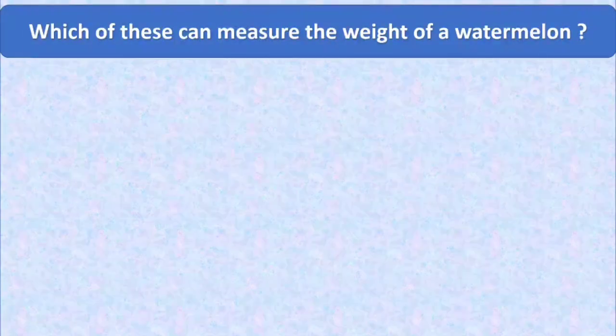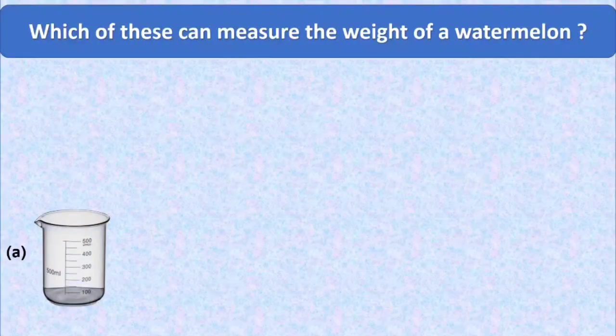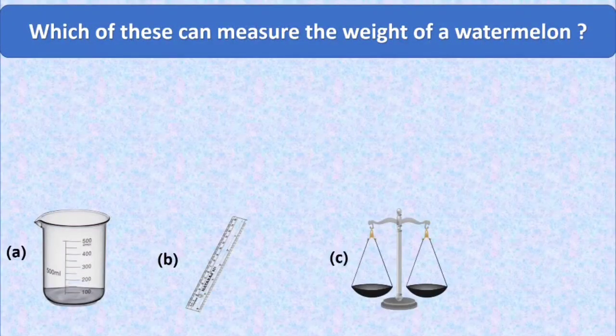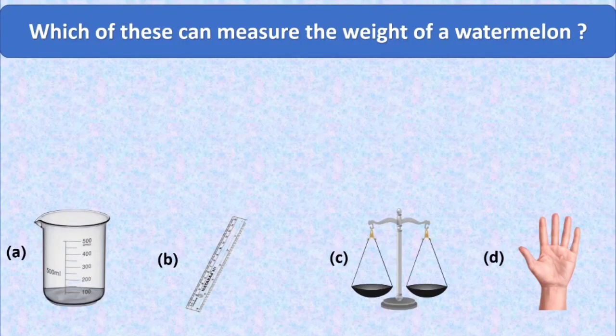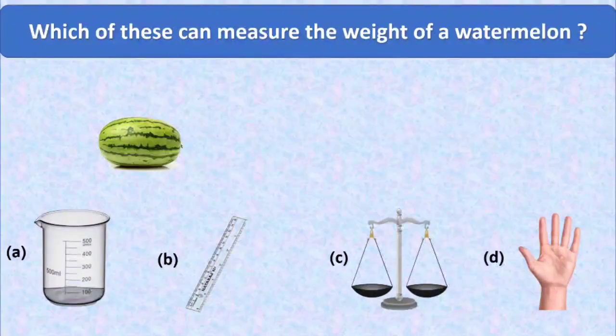Our second question is, which of these can measure the weight of a watermelon? Here we have four options. Option A is a liter or a can. Option B is a scale or a ruler. Option C is a weighing balance, and option D is a hand span or a hand's length. Let's find out which of these is used to measure the weight of a watermelon. Here we have a picture of a watermelon.